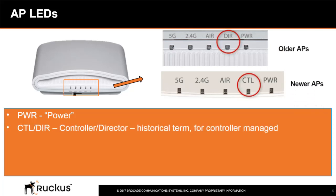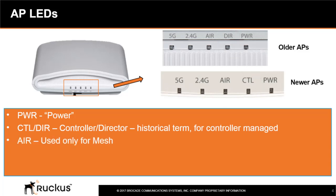Next is the Control or DIR LED. Older Ruckus access points use DIR, which stands for Director — a historical Ruckus term used to describe controller management to the AP. Next is the Air LED, which is only used when mesh is enabled. And finally, there are the 2.4 and 5 GHz LEDs, which indicate which radio bands on the AP are operational.